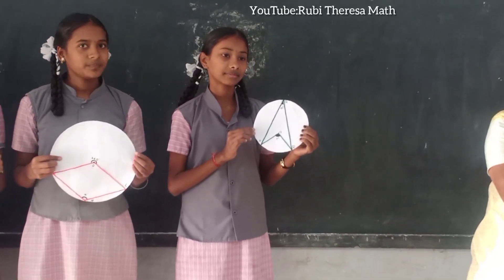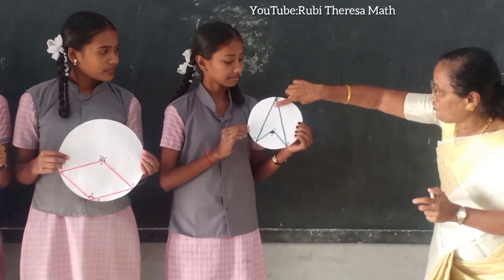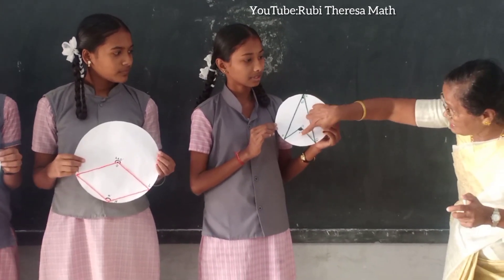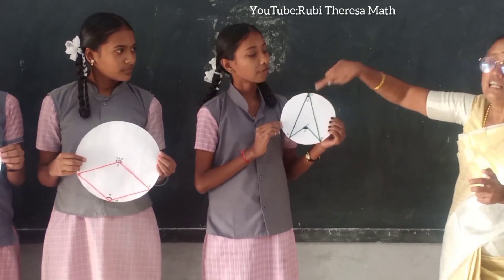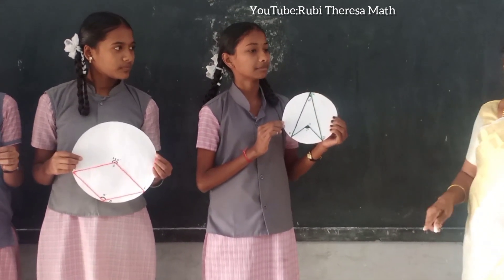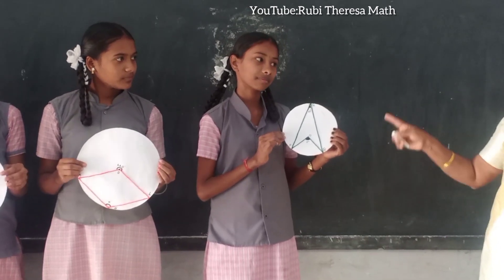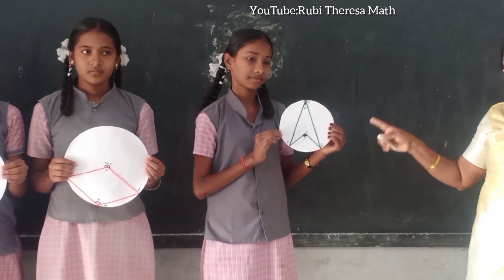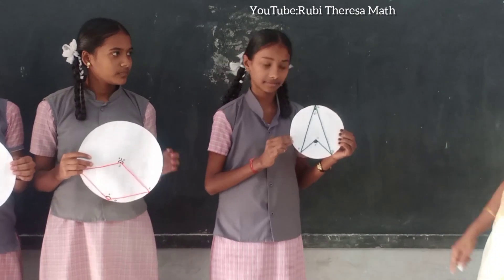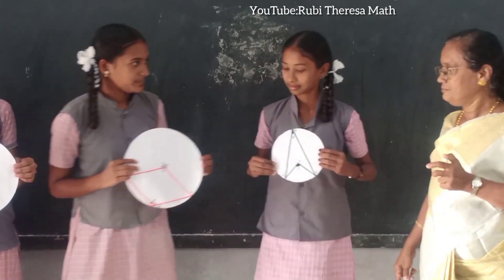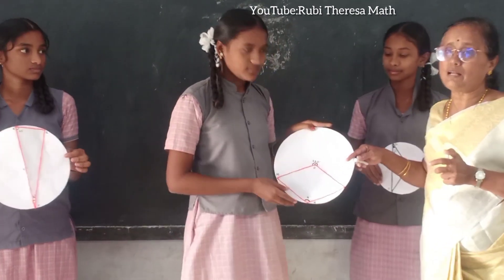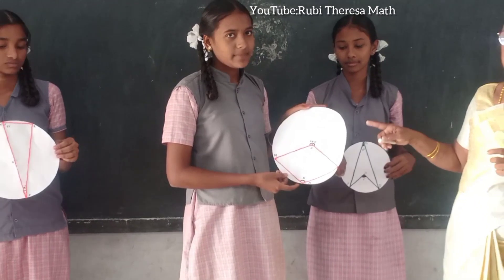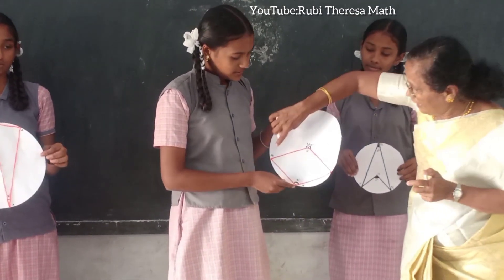Very good. If the angle at the circumference is 50, the angle at the centre is 100. Suppose if it is 100, this is 50. Do you follow? First problem — is it okay? Yes. Very good. Second problem — same theorem.